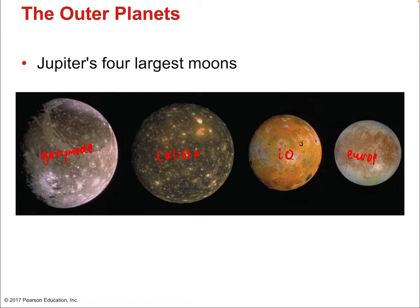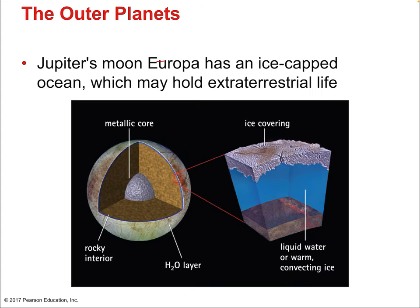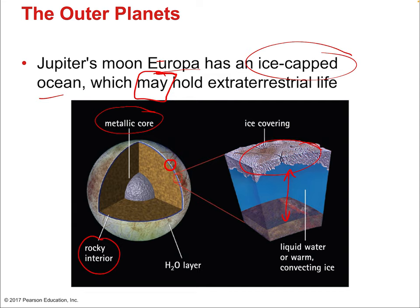Beneath Europa's ice, there is very strong evidence supporting the existence of a liquid water ocean — a huge ocean spanning the entire moon underneath the ice layer, like a melted glacier with water underneath. Jupiter's moon Europa has an ice-capped ocean which may hold extraterrestrial life. The moon itself is rocky, with a rocky interior and a metallic core like a terrestrial planet, though it's a moon of a gas planet.